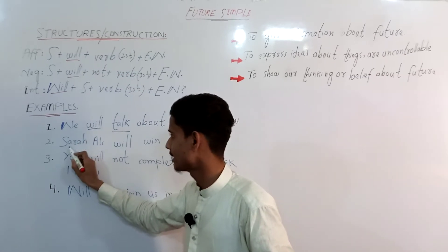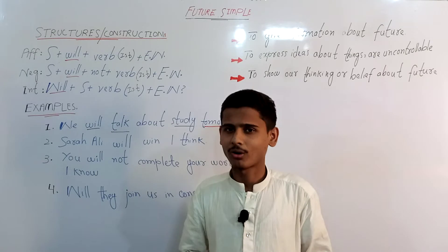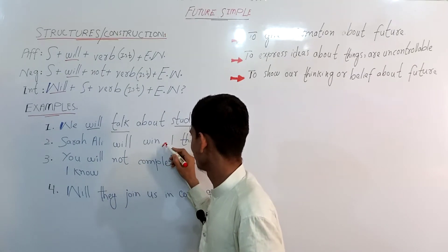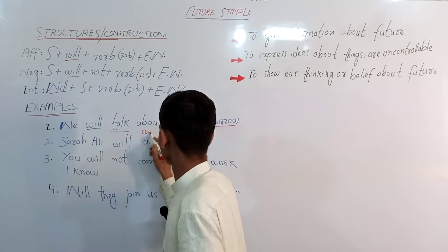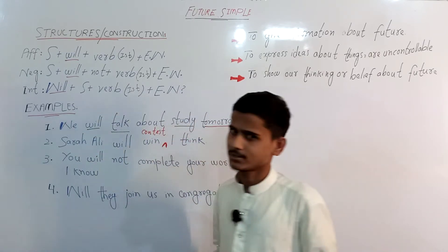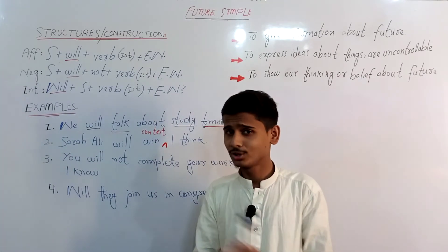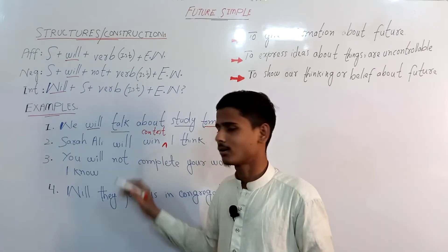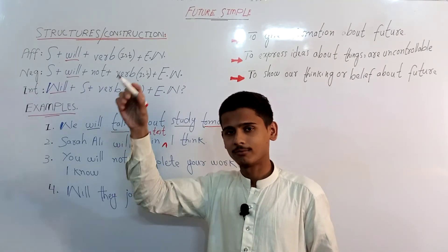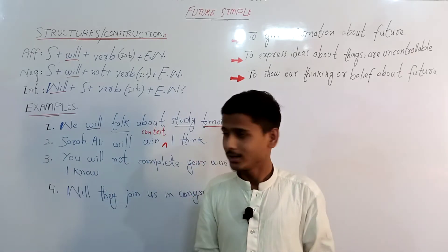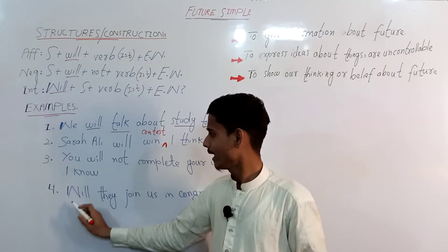Second example: 'I think Sarah Ali will win the contest.' 'Win' is a transitive verb, so we must add an object — 'contest'. Third example, a negative: 'You will not complete your work.' 'Will not' is contracted as 'won't', so: 'You won't complete your work.' This also refers to the future, since this is a simple future sentence.